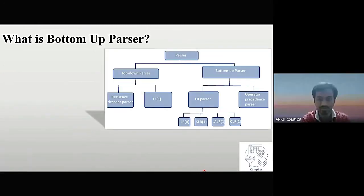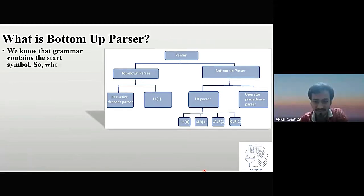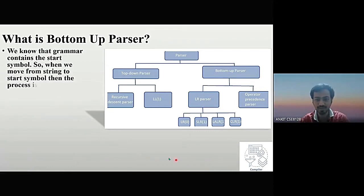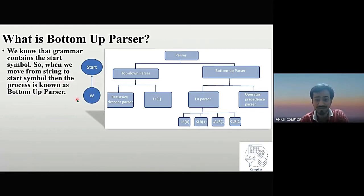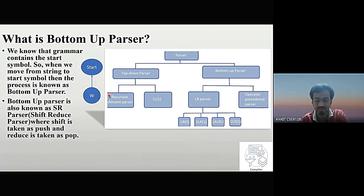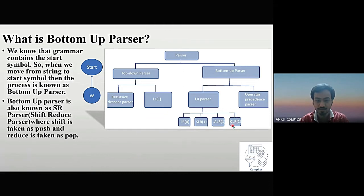In the bottom-up parser, the process of moving from any string back to the start symbol is known as bottom-up parsing. Bottom-up parser is also known as shift-reduce parser, where shift means push and reduce means pop. The LR parser has four divisions: LR0, SLR1, LALR1, and CLR1.